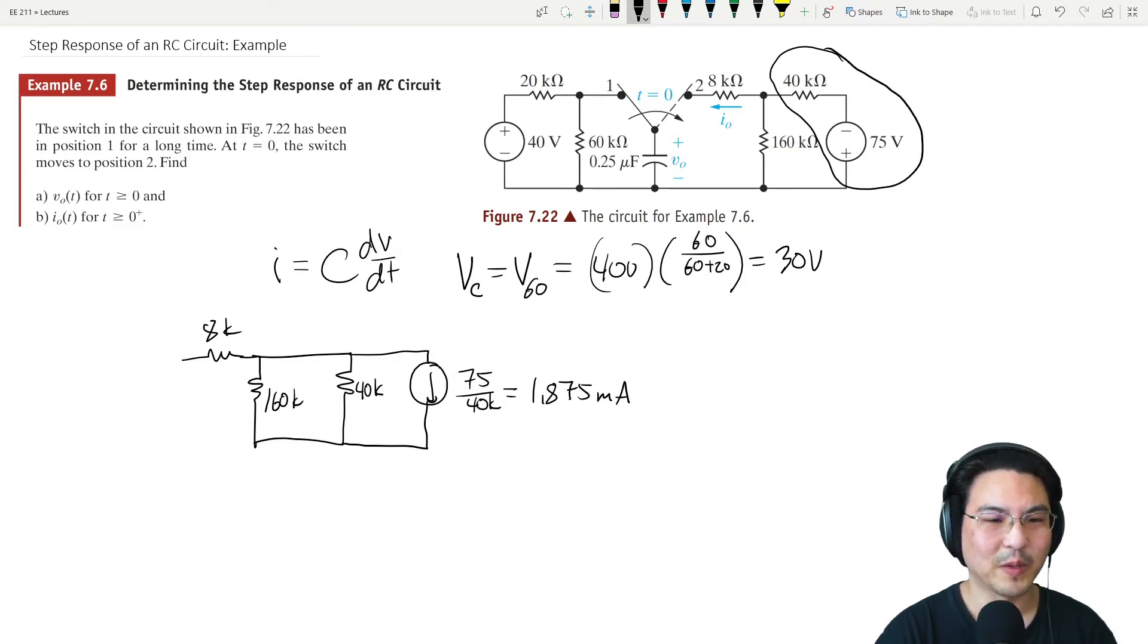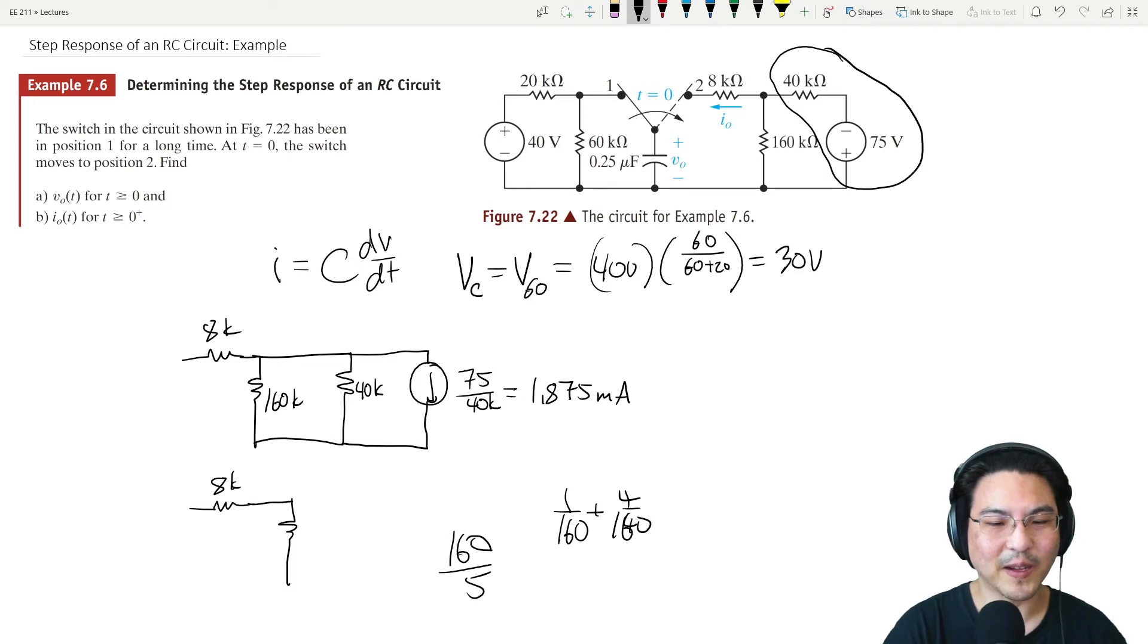Now we can combine those in parallel. So 160 and 40, that's 4 over 160, so 5 over 160. Take the reciprocal, so 160 over 5 which is 32k. Then combine those in parallel.